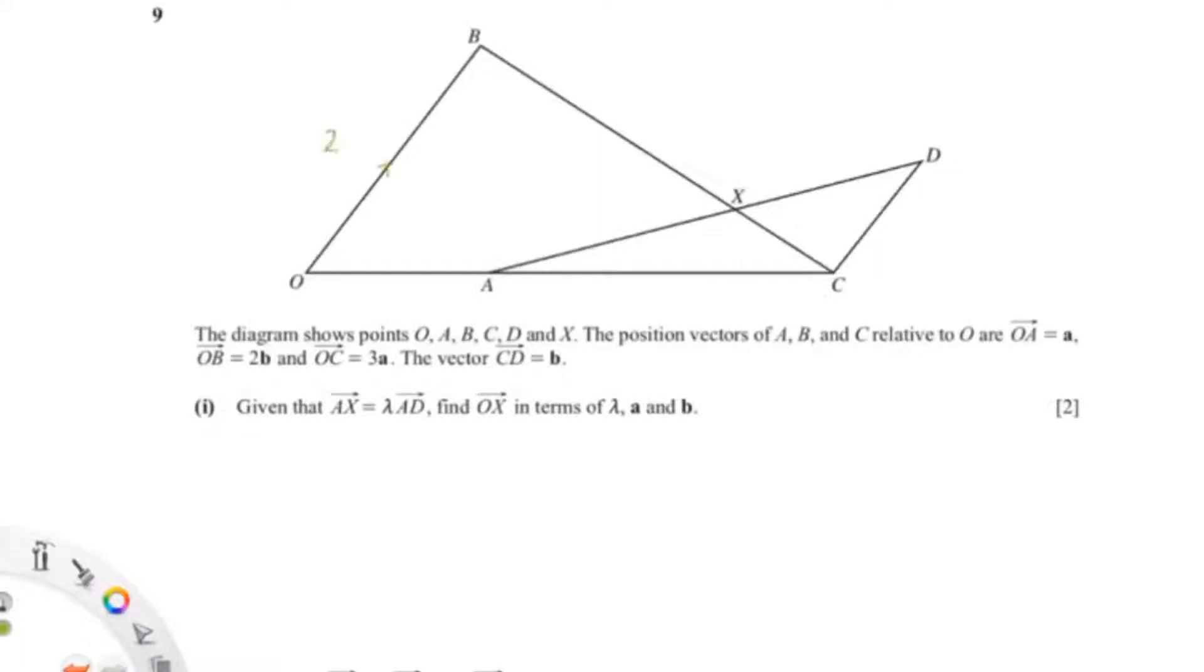In this video I'll be answering vector based questions. So we know that OB is 2B because it's given in the question, OA is A, and OC is 3A, so that means AC is 2A.